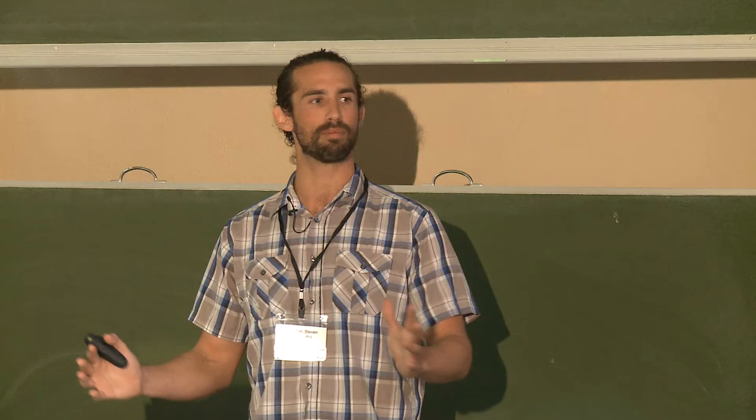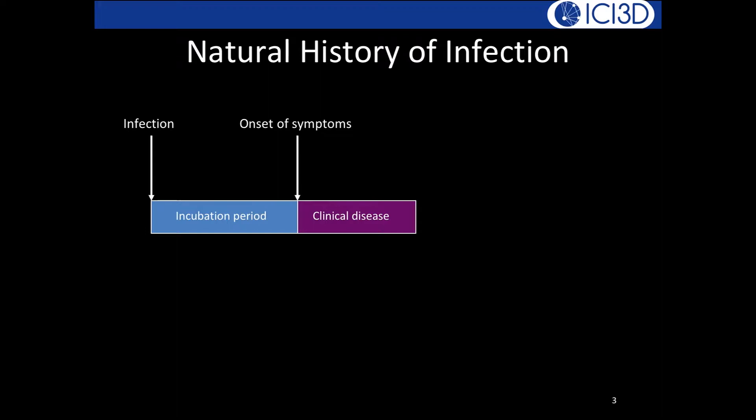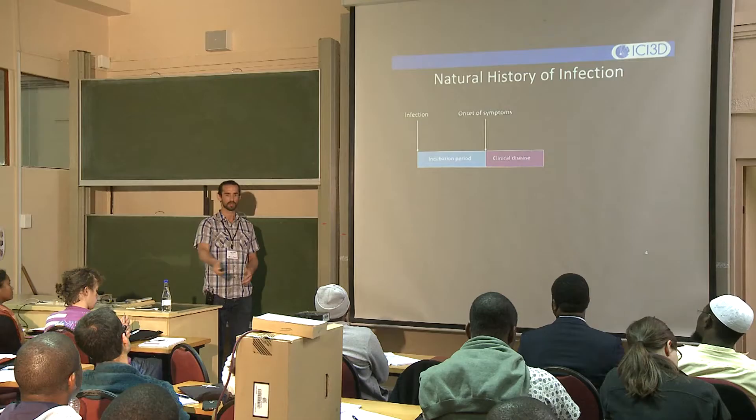Starting with the natural history of infection: if you're a healthy person and somebody exposes you to a pathogen, you don't get sick immediately. There's an incubation period — the period between infection and when you become symptomatic. Once you're symptomatic, you may have disease for some period of time, called the duration of clinical disease.